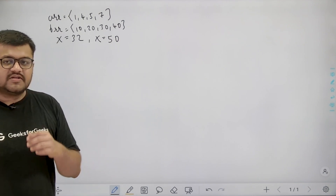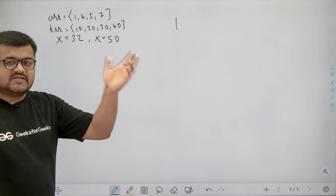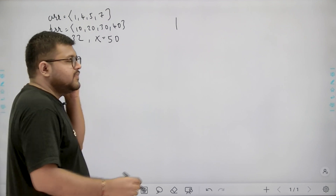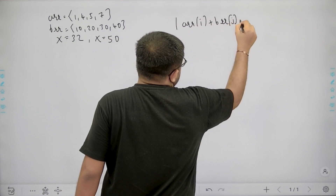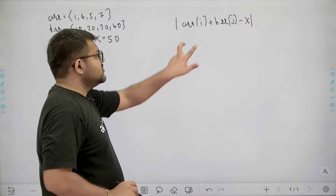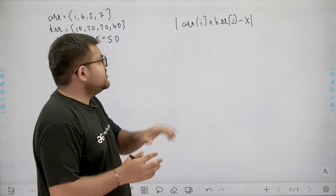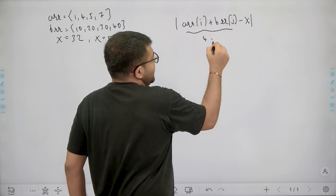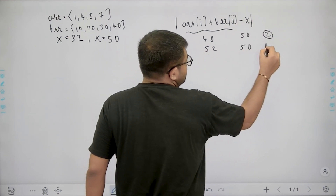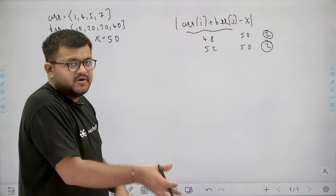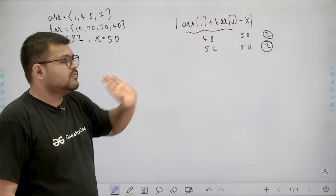Now if you think about solving this problem, what we want to do is make a pair of elements — one from ARR and one from BRR — such that ARR[i] + BRR[j] is as close to x as possible. The absolute difference between the sum of the pair and x should be as minimum as possible. It does not mean the sum must be less than or greater than x — it just needs to be as close as possible.